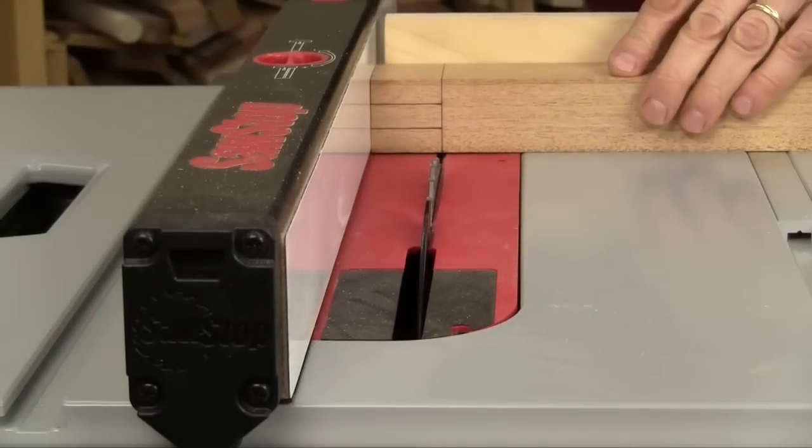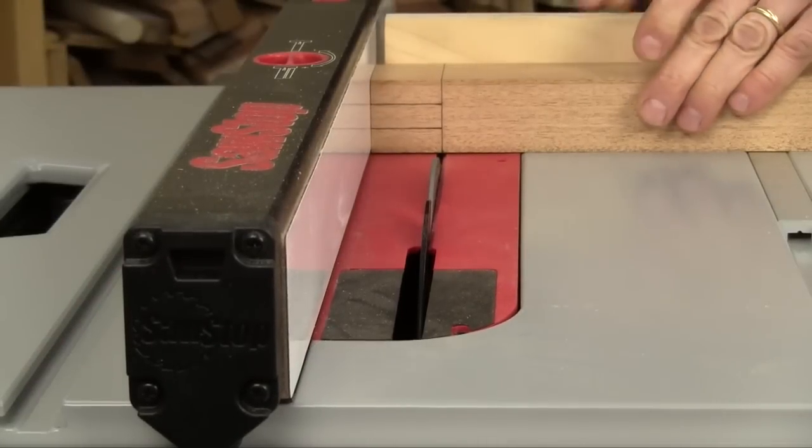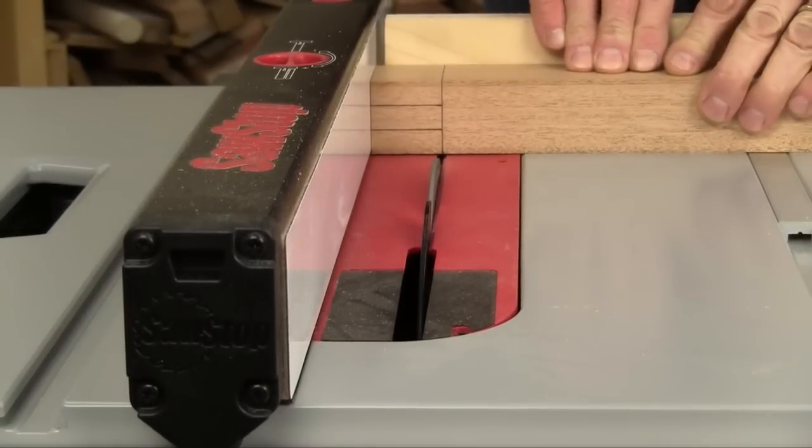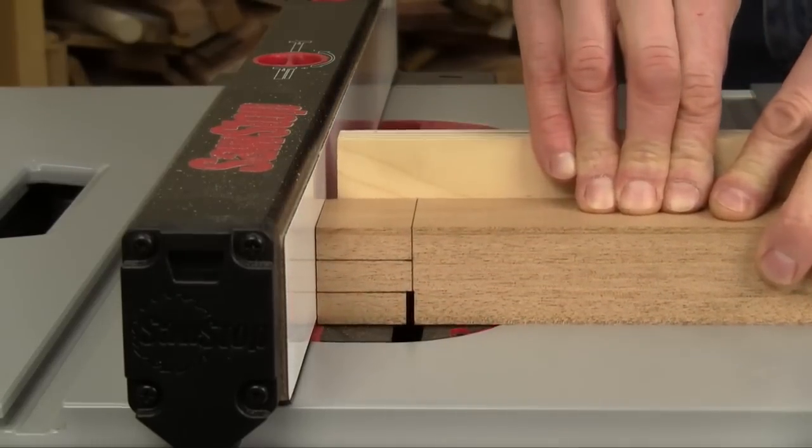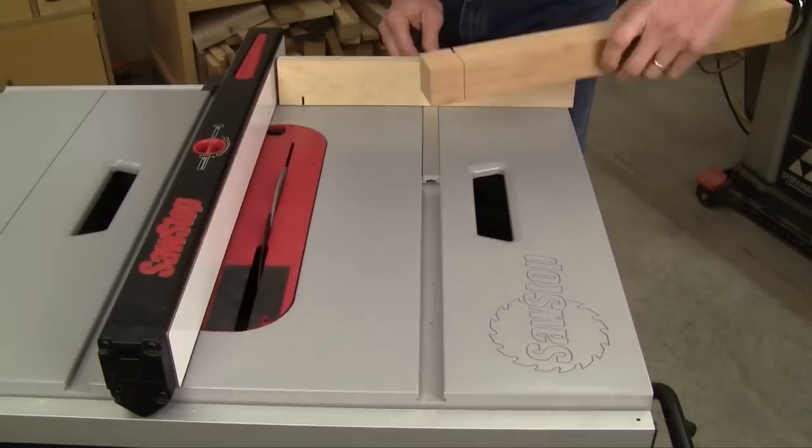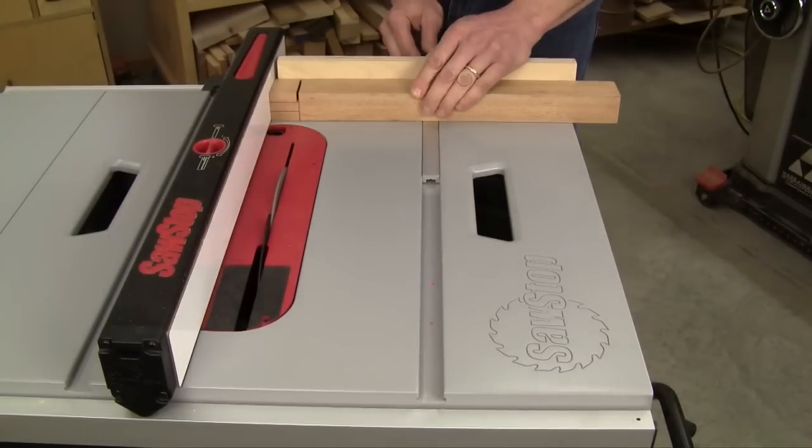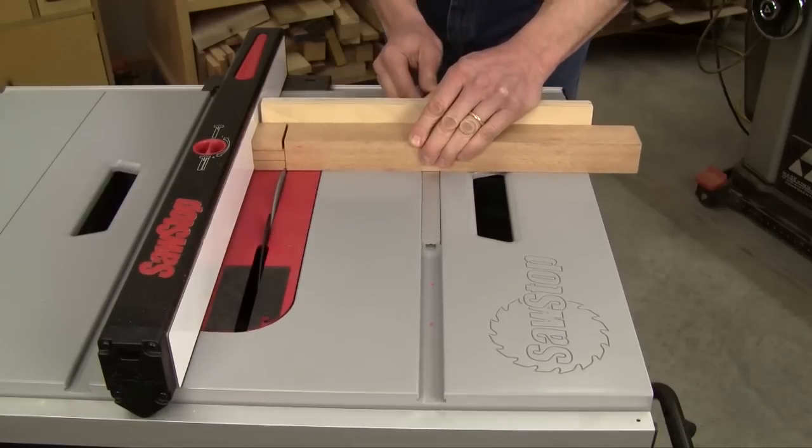You're all set to cut the long side shoulders. Start the saw and push the miter gauge through to make the first cut. Keep the end of the work piece pressed against the rip fence. Then carefully pull the miter gauge back, flip to the other work piece face, and repeat to cut the other long shoulder.